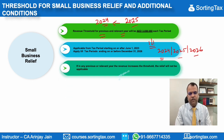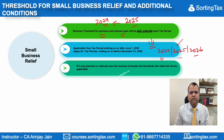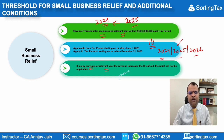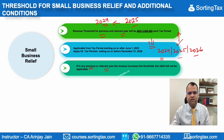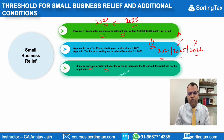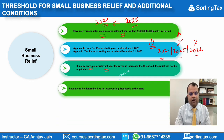If the revenue exceeds the threshold in any previous year or the relevant year — say if in 2025 your revenue is 3.5 million dirhams — the relief will not be applicable. Importantly, if in 2025 your revenue exceeded the threshold, you cannot claim the benefit in 2026 even if your revenue in 2026 is less than 3 million dirhams. Revenue calculation must be done as per the accounting standards prescribed in the UAE.